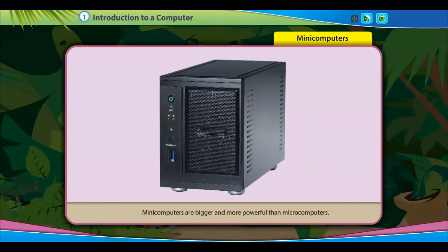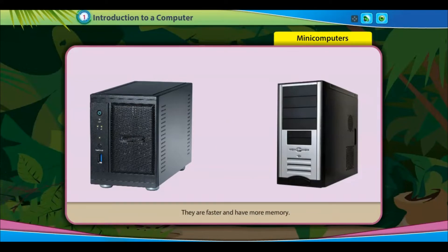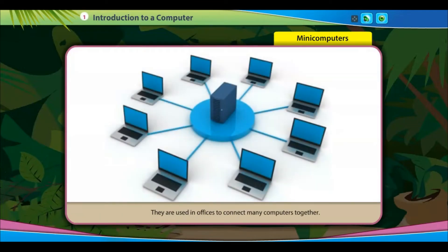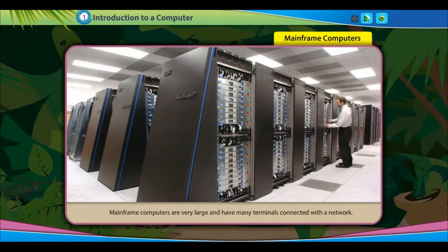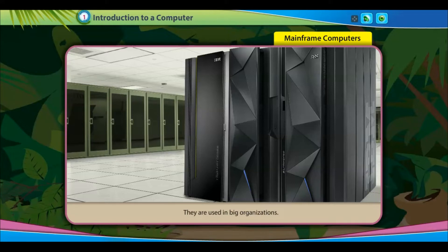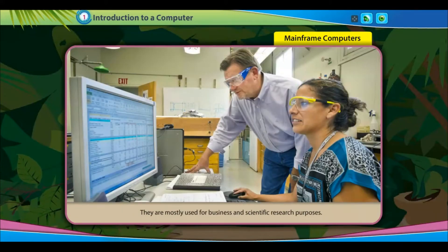Mini computers are bigger and more powerful than microcomputers. They are faster and have more memory, and are used in offices to connect many computers together. Mainframe computers are very large and have many terminals connected with a network. They are used in big organizations and have faster speed and larger storage capacity than mini computers. They are mostly used for business and scientific research purposes.